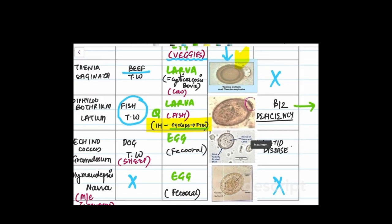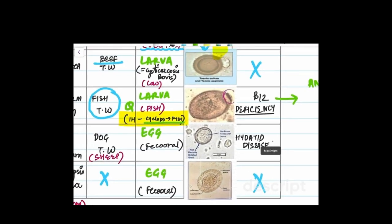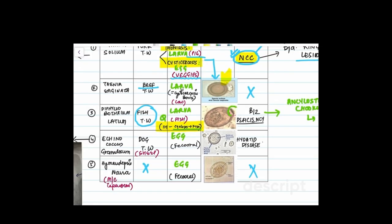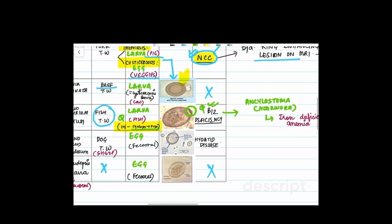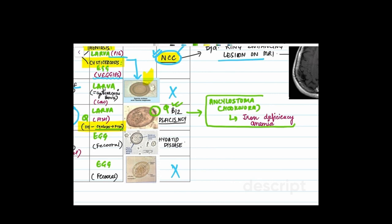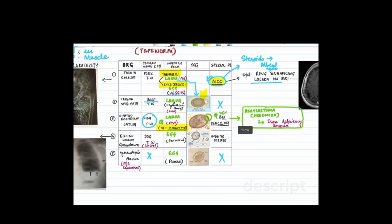Talking about the egg of Diphyllobothrium latum, the egg has a covering or an operculum. This is the diagnostic feature and this question is also asked. The clinical disease it causes is Diphyllobothrium anemia which is a kind of B12 deficiency anemia. This is again a previous year question. Remembering what I discussed in my previous video, Ancylostoma which is the hookworm causes iron deficiency anemia. So remember both these points together.